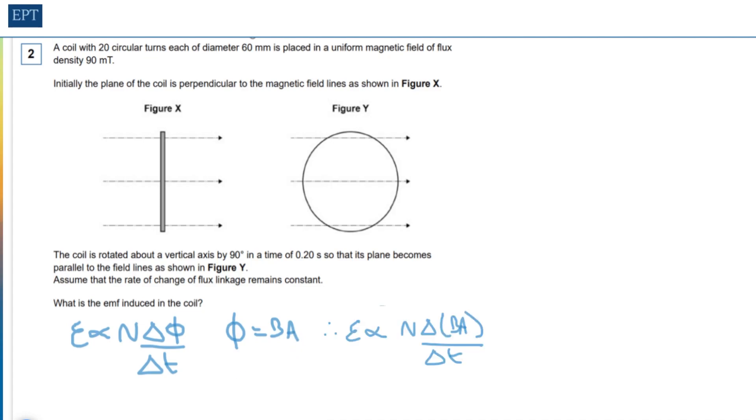We can then substitute those two formulas together. Now we need to know how much the flux has changed. That's going to be simply the maximum value of flux at position X take away zero, which is the amount of flux at position Y.